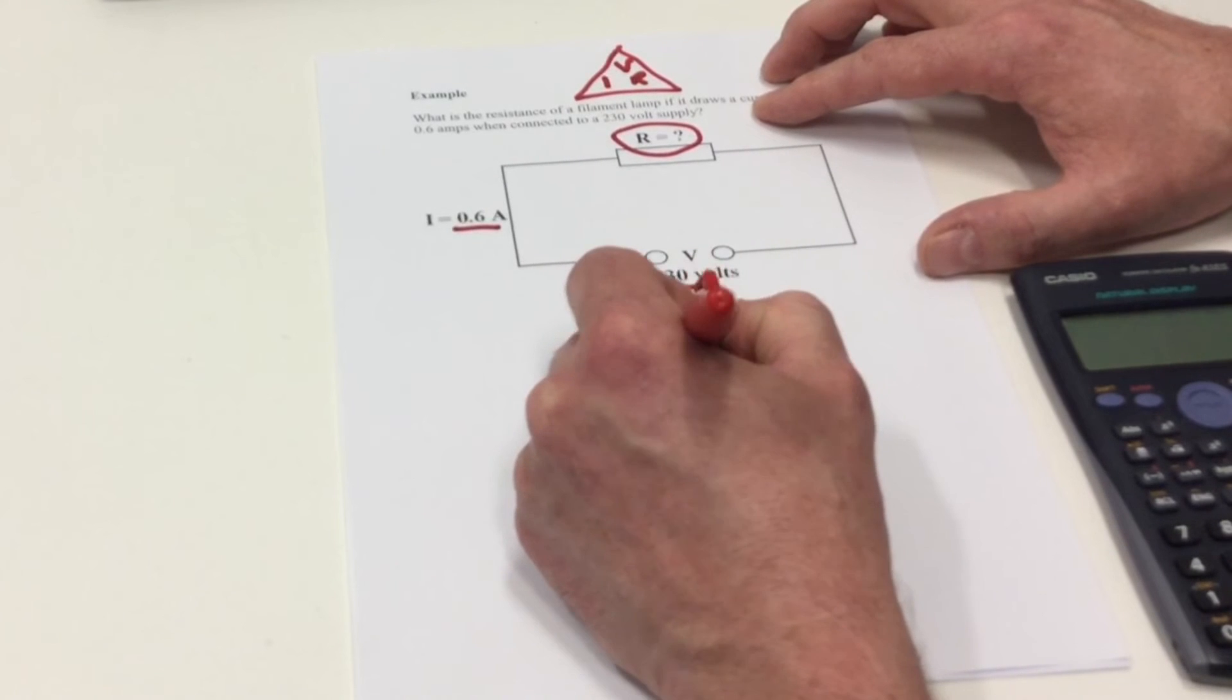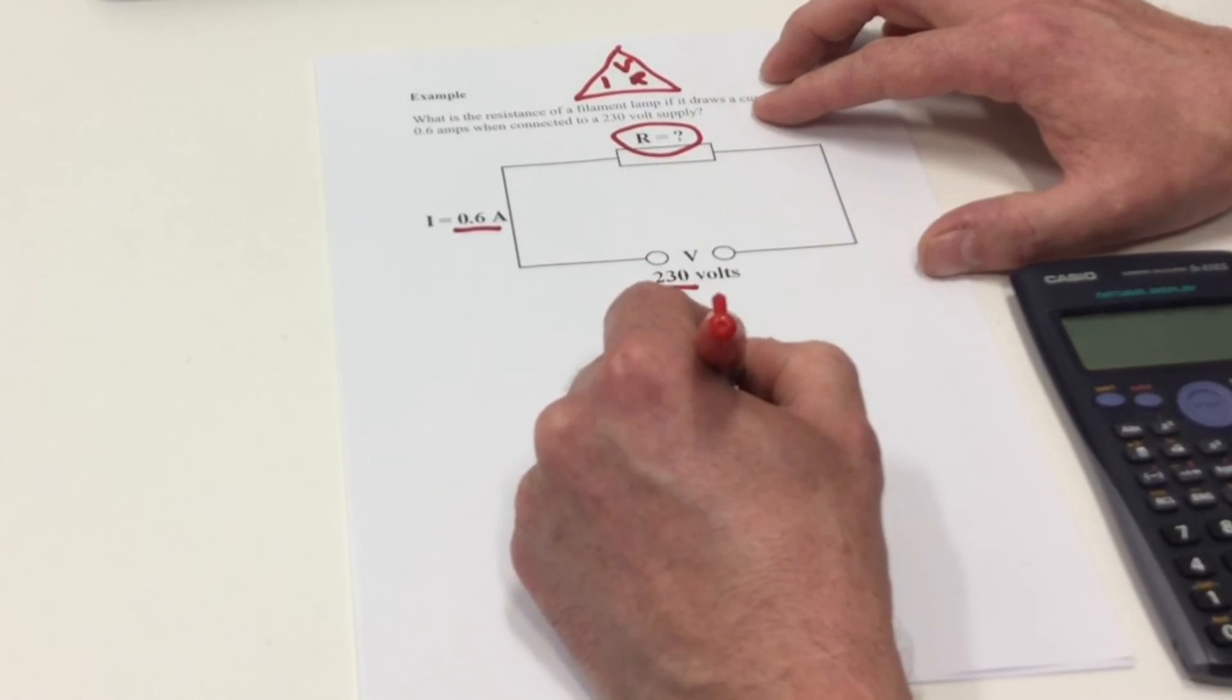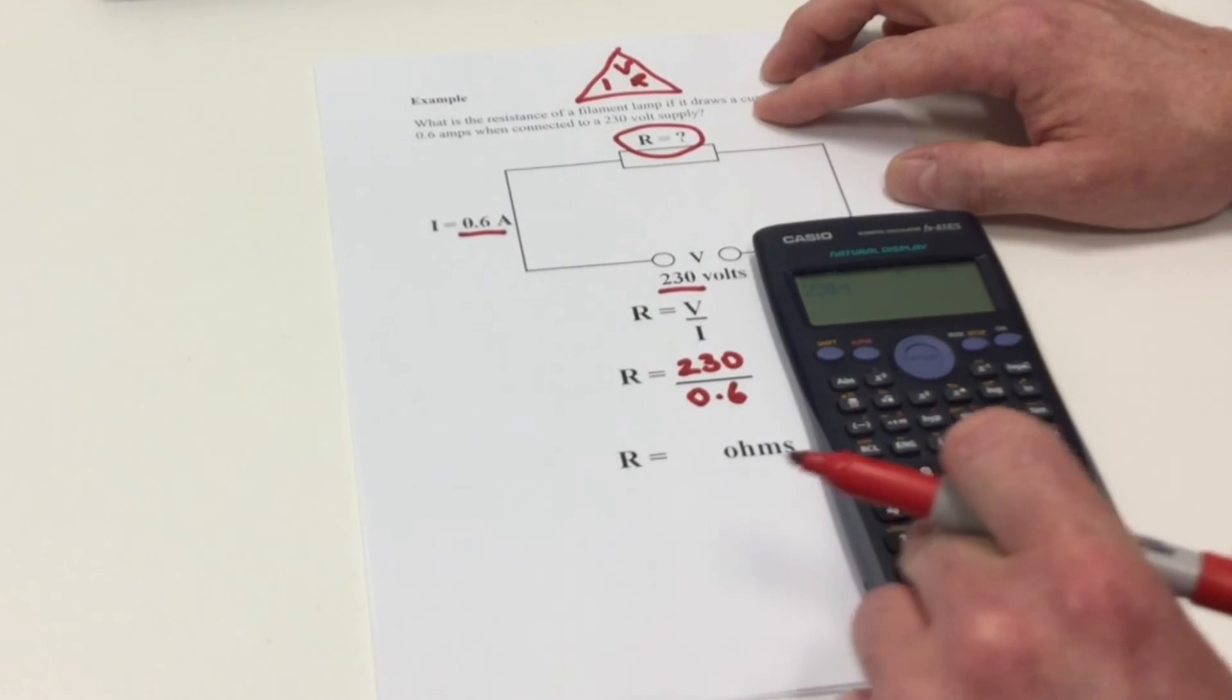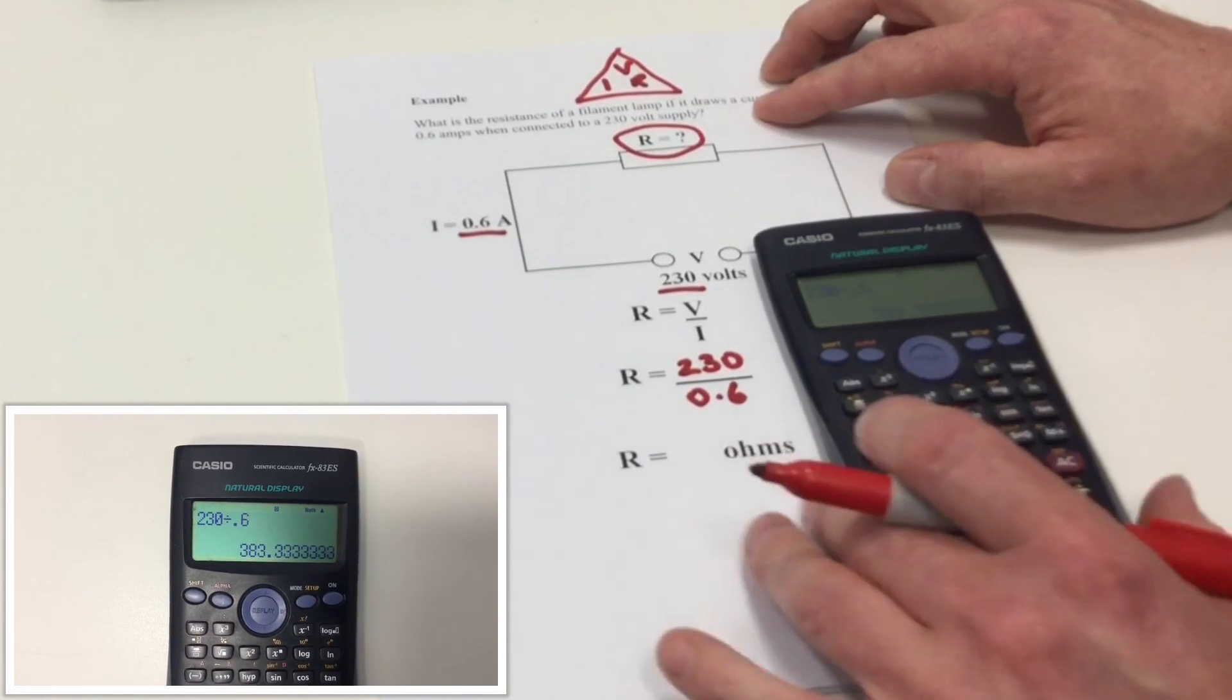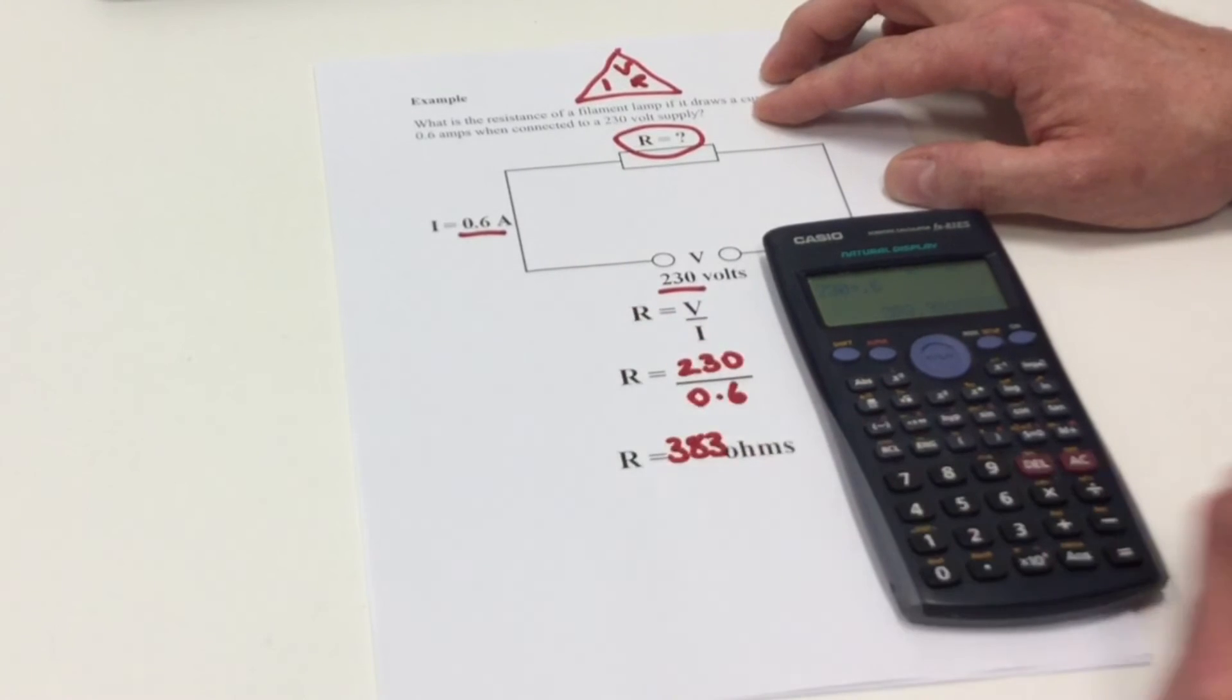The circuit voltage is 230 volts. The circuit current is 0.6 Amps. Therefore the total resistance is 383 Ohms.